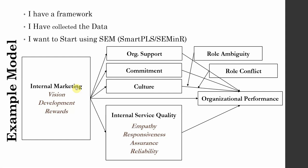Now, this is the model. Let's say you've got this model here, or maybe a model similar to this one, and you would like to test this whole model using SEM, primarily in Smart PLS. This is a higher order construct, this is a higher order construct, and these are lower order constructs. These are the two moderators' lower order constructs. I'm taking this one as a reflective higher order construct and this one as a formative higher order construct, just for the sake of understanding how reflective-reflective and reflective-formative higher order constructs can be used.